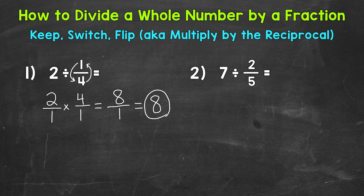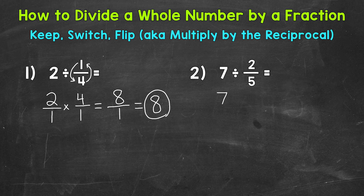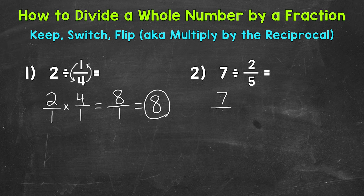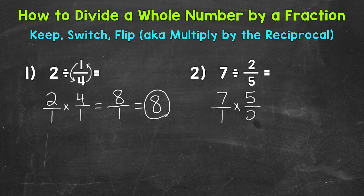Let's move on to number two, where we have seven divided by two fifths. So we are finding out how many two fifths are in seven, so to speak. So keep, switch, flip. We will keep our seven, but put it in fractional form by putting it over one, switch to multiplication, and then flip our second number or fraction.